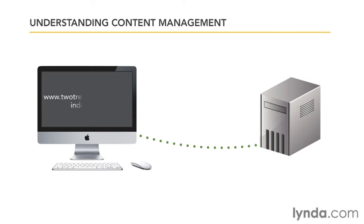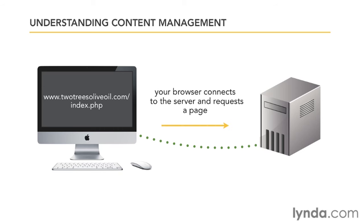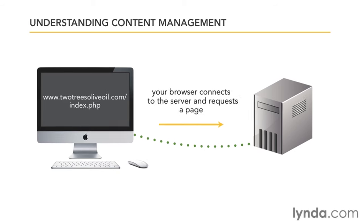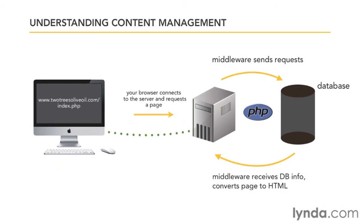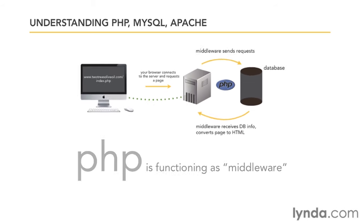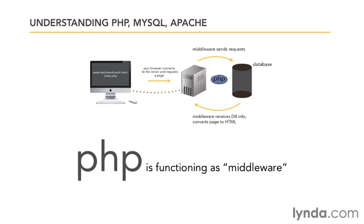Just like before, type in a web address like www.twotreesoliveoil.com/index.php into your computer's web browser. Your computer sends the request for this page to the web server. The web server looks at its files and realizes the page you've requested is written in PHP, a programming language. The web server knows it can't send this page as is to the client — some processing must be done first. So instead, the web server sends this request to PHP. PHP looks at the document, determines that some information needs to be pulled from the database and processed. PHP is functioning as middleware in this way, mediating the discussion between the web server and the database.